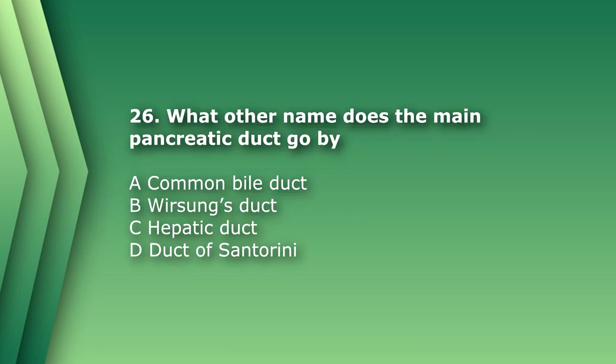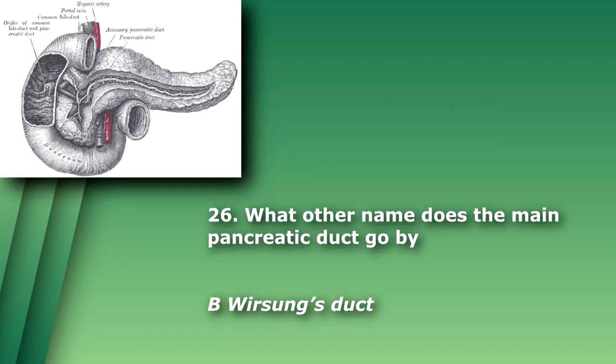Number 26. What other name does the main pancreatic duct go by? A. Common bowel duct. B. Wirsung's duct. C. Hepatic duct. D. Duct of Santorini. The answer is B, Wirsung's duct. D is also a pancreatic duct, known as the accessory duct.